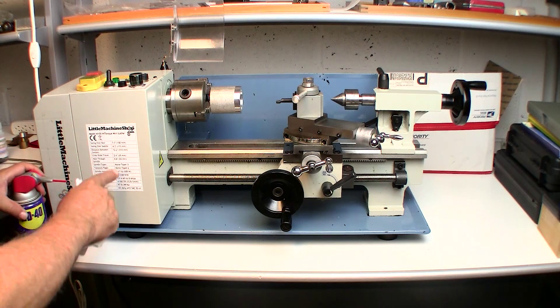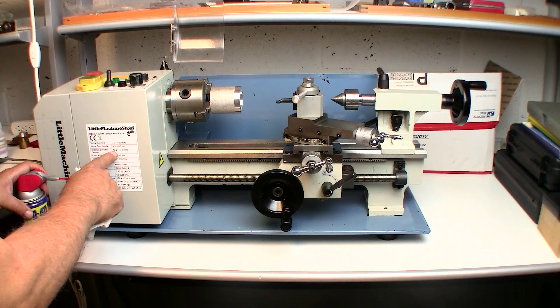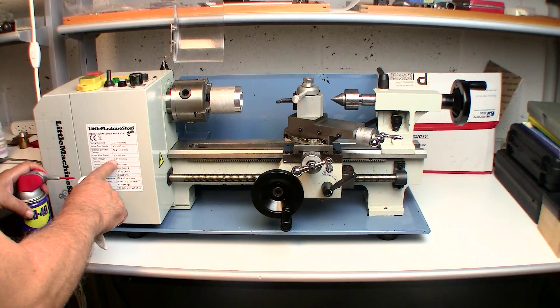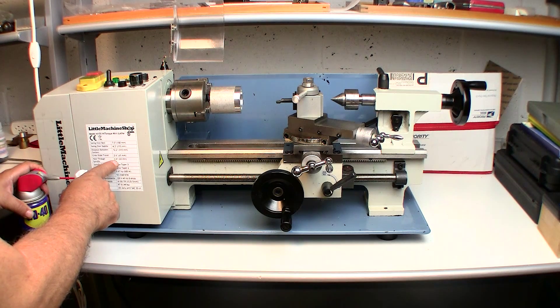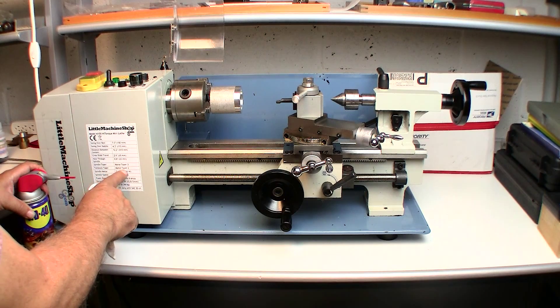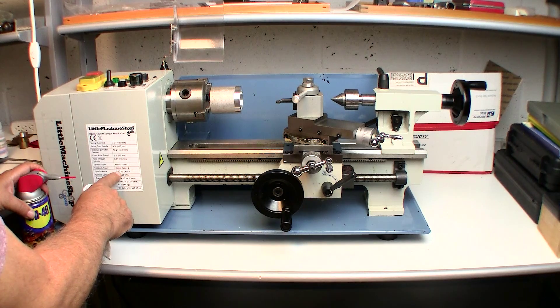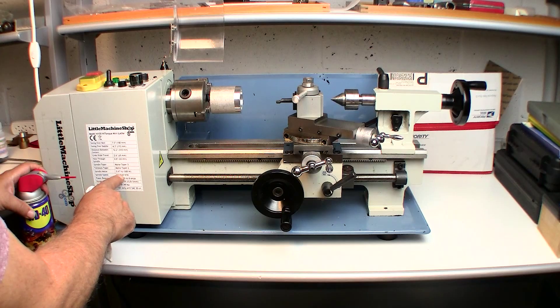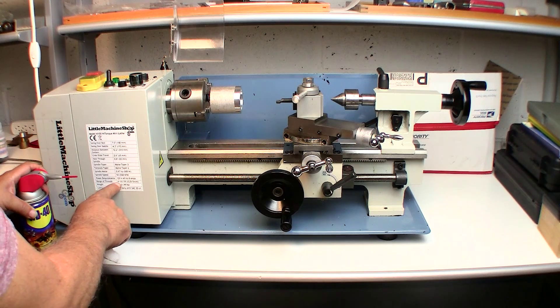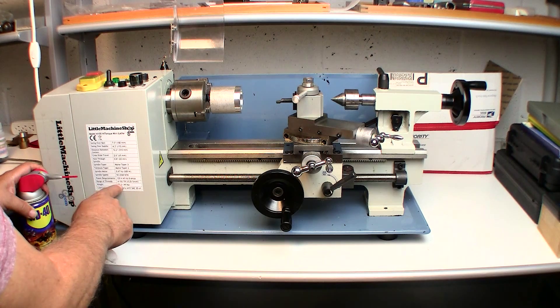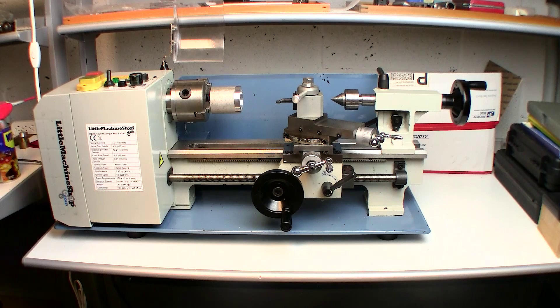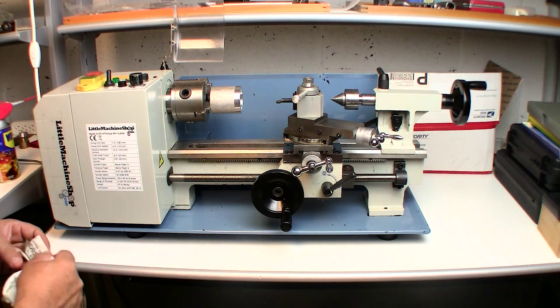Here are the specs: 7 inch over the bed, 4.3 inches over the saddle. Distance between centers is 12.2 inches. Cross slide travel 2.6 inches. The hole through the spindle is only 0.8 inches. It used to actually be 0.5 something, like half an inch. Spindle taper, this is a Morse 3 taper. Tailstock taper, Morse 2. Spindle motor, 0.67 horsepower, 100 watt. Spindle speed from 50 to 2500 RPM. Power requirements 120. This is the 120 model. Your range of threads that you can cut on the lathe is 4 to 10 TPI. The weight is quite hefty, 97 pounds. Lubrication: oil daily with SAE 30 weight oil, so you can just use the same oil you would use on your lawnmower and you would be good to go.